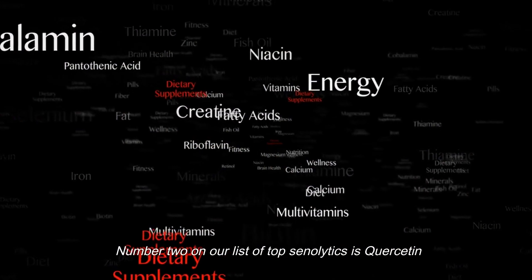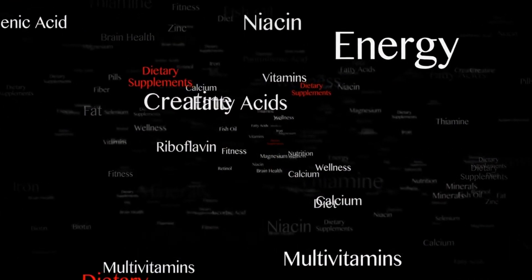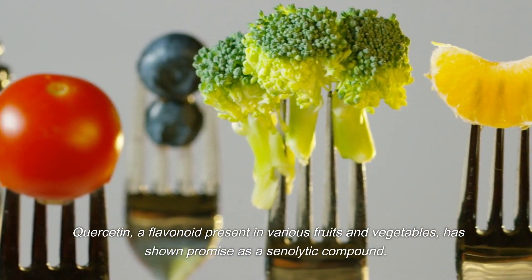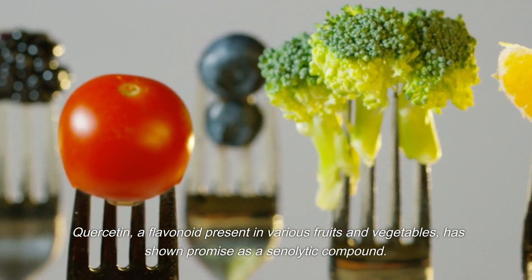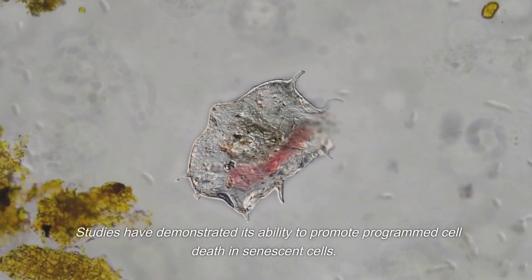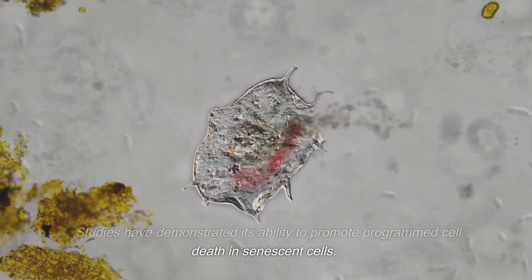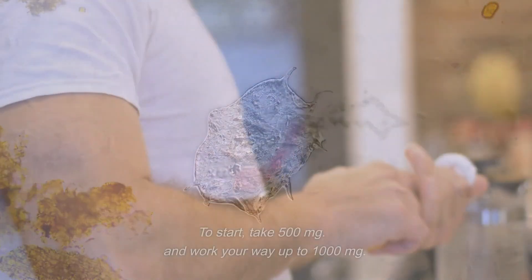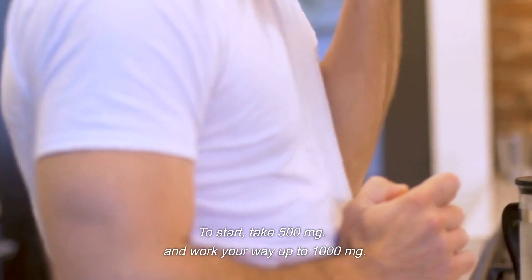Number 2 on our list of top senolytics is quercetin. Quercetin, a flavonoid present in various fruits and vegetables, has shown promise as a senolytic compound. Studies have demonstrated its ability to promote programmed cell death in senescent cells. To start, take 500 mg and work your way up to 1,000 mg.